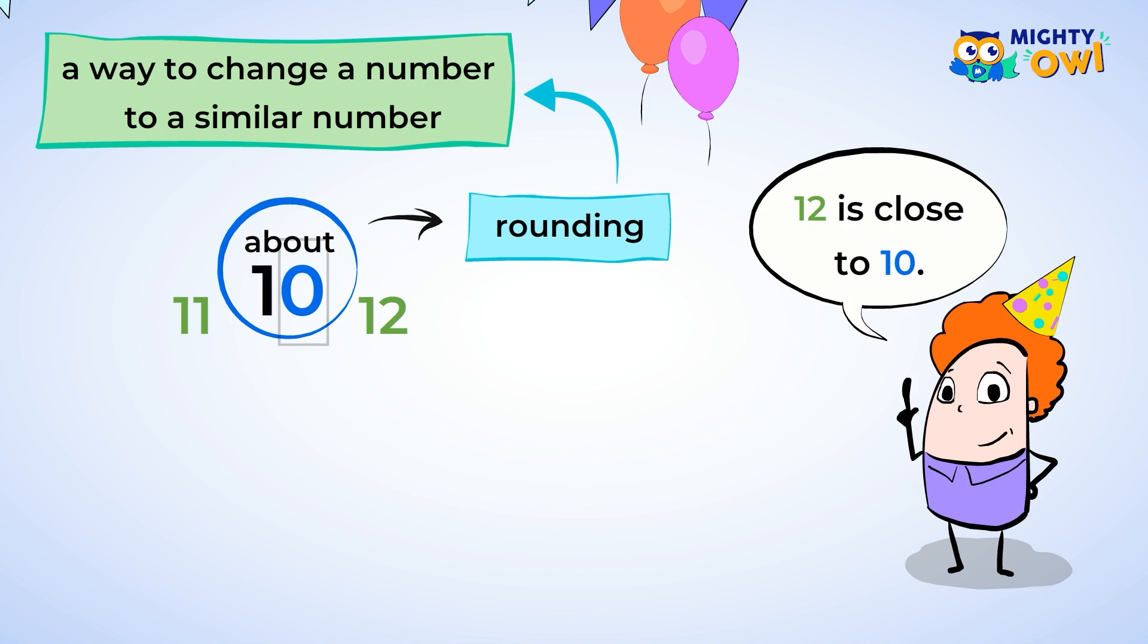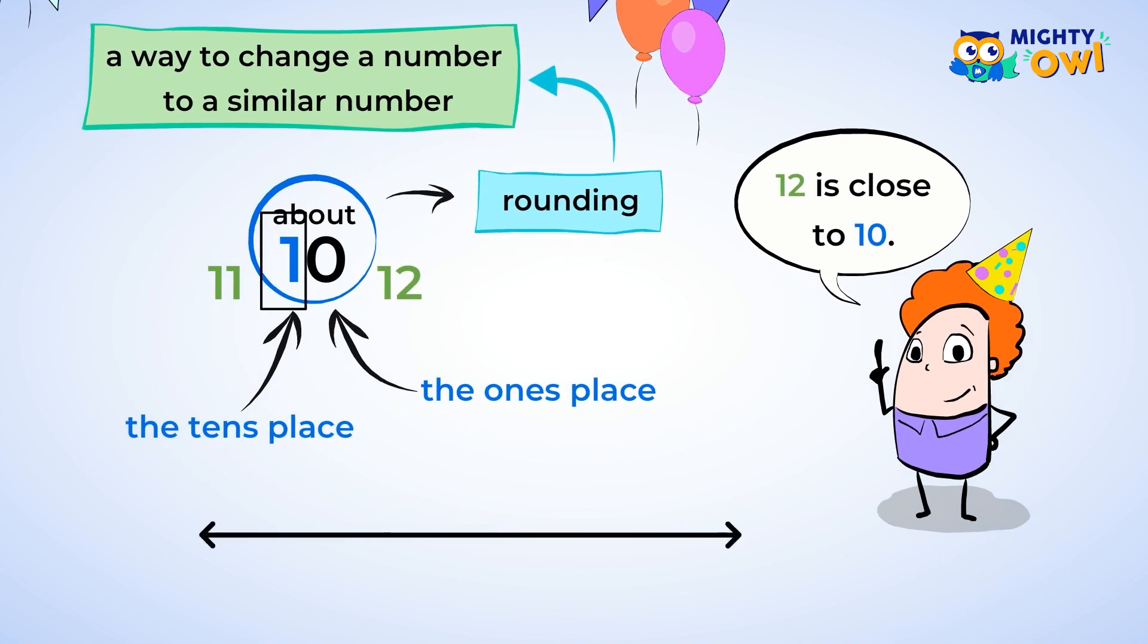Rounding uses place values, like the ones place, the tens place, the hundreds place, etc. Today, you'll practice something really useful. How to round to the tens place. 0, 10, 20, 30. Here's what a number line increasing by tens looks like.